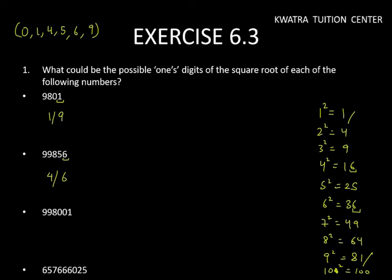Next, we have 998001. Again, the same as the first one. The third number ends in 1, so which numbers squared end in 1? 1 or 9.